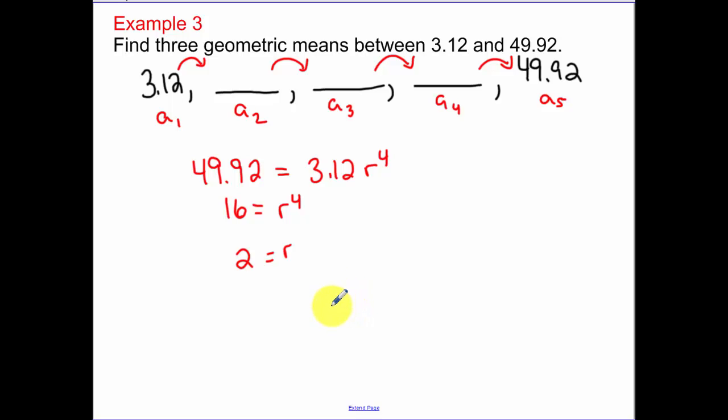So then now it's just a matter of using your calculator and taking 3.12 times 2 to get 6.24. Taking and multiplying that by 2 again, we get 12.48. Taking and multiplying by 2 again, we get 24.96. Multiply by 2 again, just to make sure you get to that value, and you should.